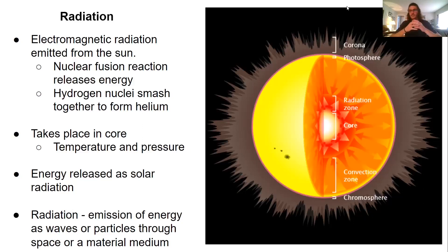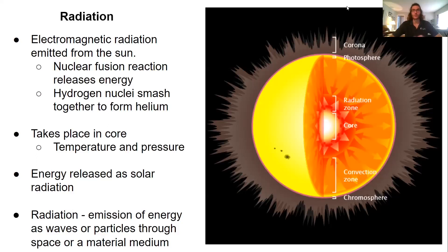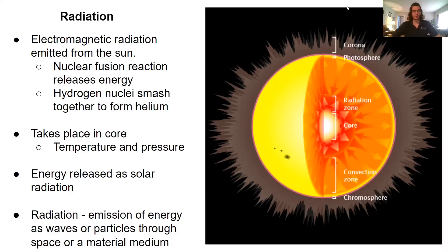What happens is in the core of the sun — the center, which you can see in this diagram — the core is very, very hot and there's a lot of pressure. Because it's so hot, hydrogen atoms can smash together, and when they smash together they form helium. When they're smashing together and forming helium, energy is released as a reaction from that nuclear fusion. And so when energy is released, it's released as different wavelengths of solar radiation.